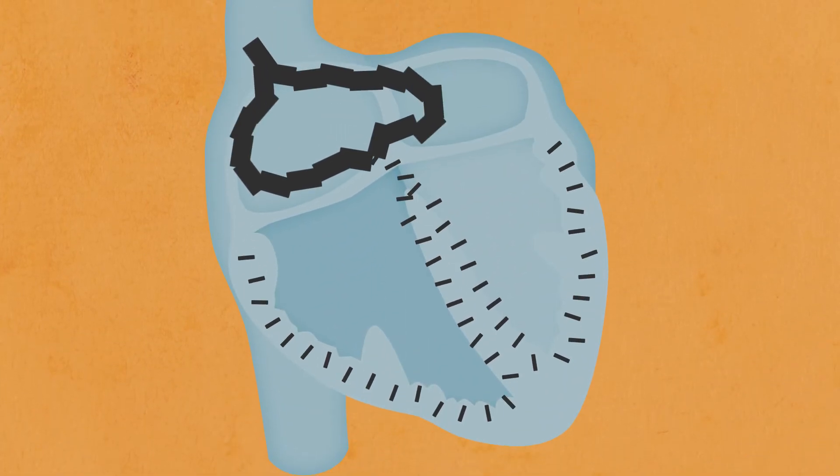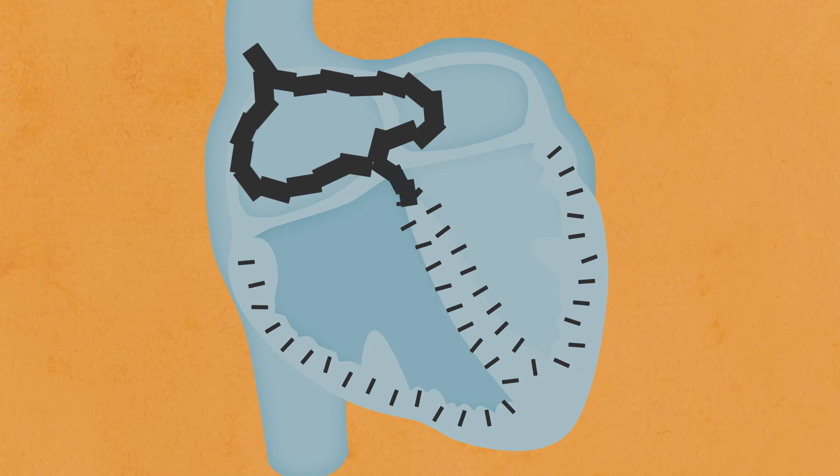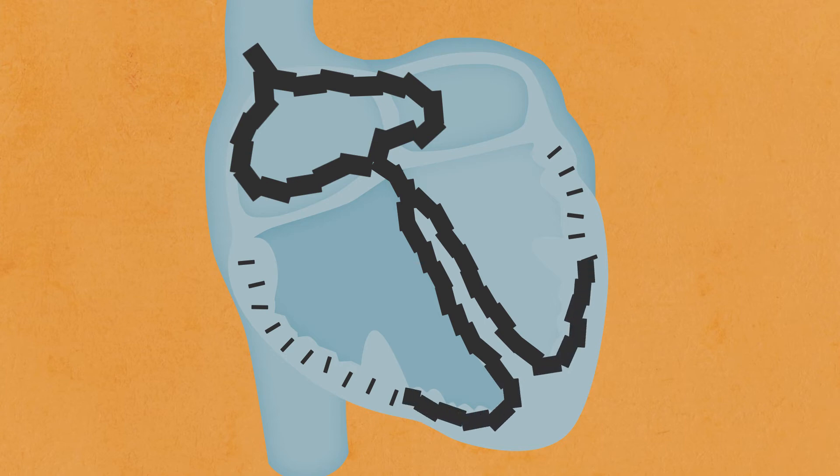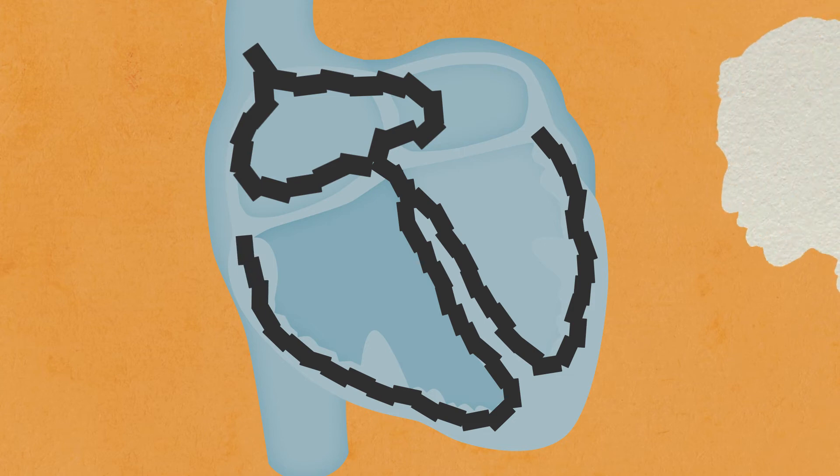Okay, so let me get this straight. As the dominoes branch off again, they travel to the bundle of His and the bundle branches, and these dominoes collapse at a faster speed than the AV node. The action potential then depolarizes the ventricles at the same time. Yeah, you got it.